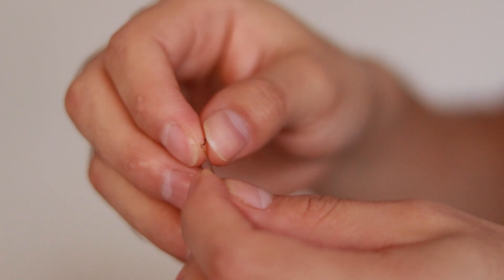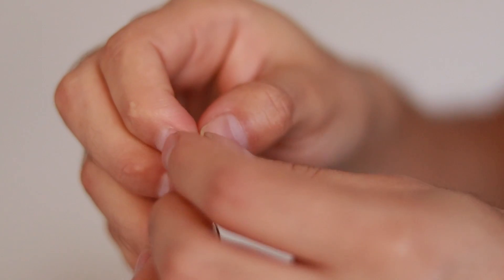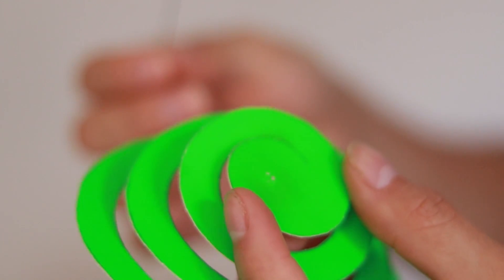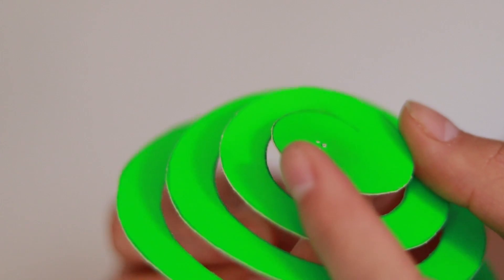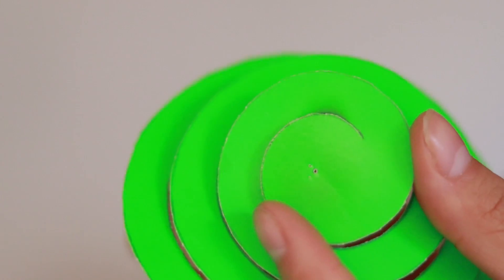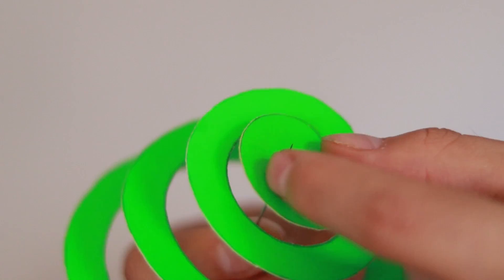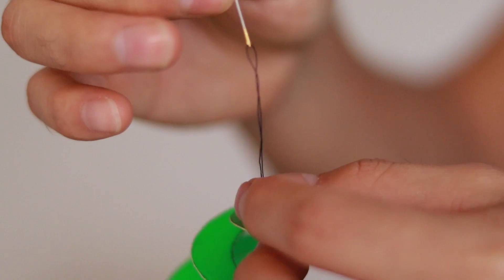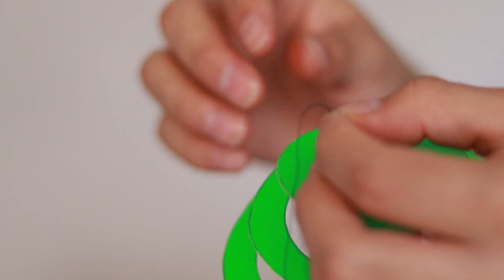We are going to put the other end into the eye of the needle, which will help us pass the thread through the center of the spiral from the bottom. Once the thread has passed, we can remove the needle.